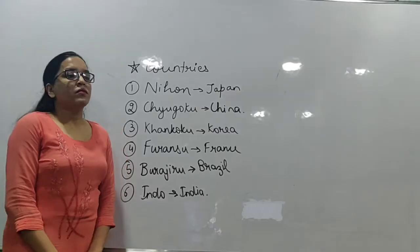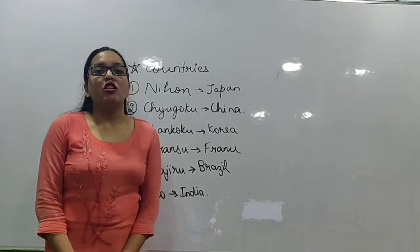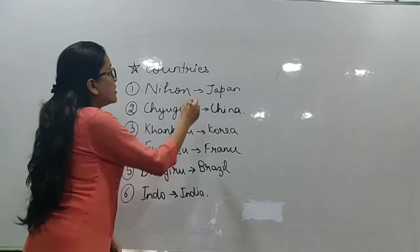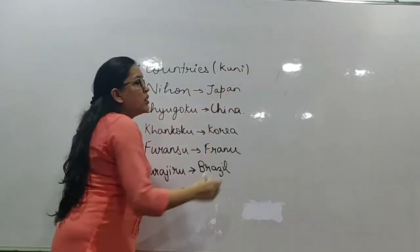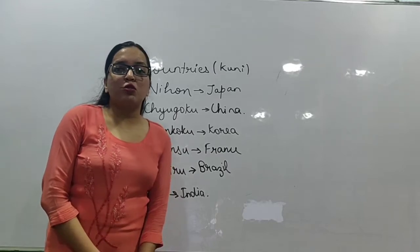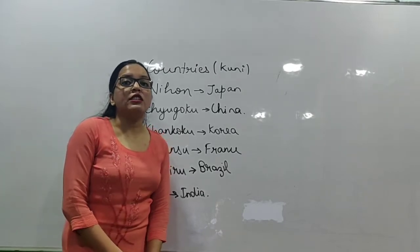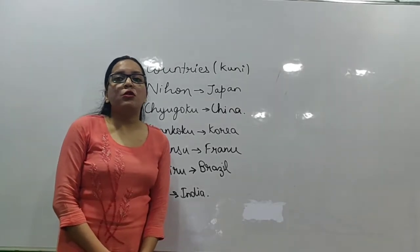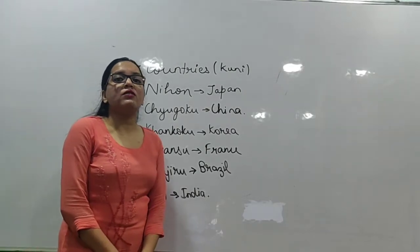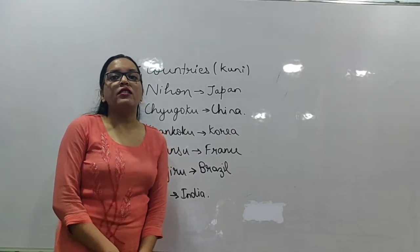Now we will learn about countries in Japanese language. 'Kuni' means country in Japanese. The first country is Japan itself — Japan is not called 'Japan' in Japanese. Japan is called 'Nihon.' Even if you go to Japan, they will call it Nihon. The second country is China, which has its own word: 'Chugoku.' The third country is Korea, which is called 'Khankoku.'